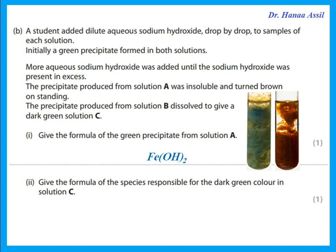The precipitate produced from solution B dissolved to give a dark green solution C. The one that forms a green precipitate that dissolves when adding excess sodium hydroxide is chromium. So this is Cr³⁺. You write it as [Cr(OH)₆]³⁻ — chromium with six OH ligands. The chromium has an oxidation state of +3 but with six OH⁻ ions, the overall charge on this complex is 3 minus.